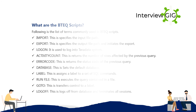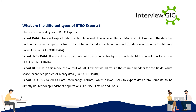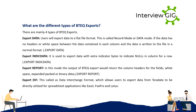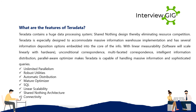What are the different types of BTEQ exports? There are mainly four types: Export Data — users export data to a flat file in record mode or data mode, where data has no headers or white space between columns; Export Indicator Data — used to export data with extra indicator bytes to indicate nulls in a column for a row; Export Report — the output returns column headers with white space, expanded, packed, or binary data; Export DIF (Data Interchange Format) — allows users to export data from Teradata to be directly utilized in spreadsheet applications like Excel, FoxPro, and Lotus.